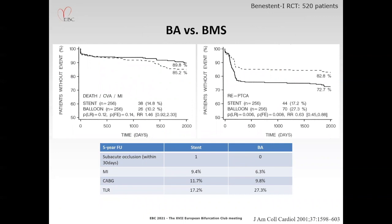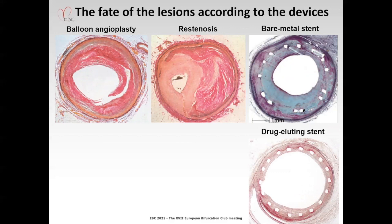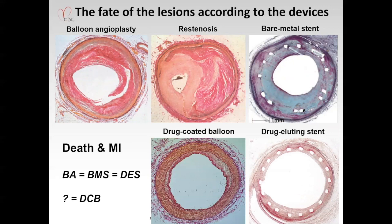Drug-coated balloon is basically working as a balloon angioplasty mechanism, so we need to know the balloon angioplasty effect. The BENESTENT-1 RCT compared balloon angioplasty to bare-metal stent and there was no difference in hard endpoints such as death and myocardial infarction. Only repeat PCI was more in the balloon angioplasty group, due to restenosis, which can be resolved with local drug treatment like drug-coated balloon. Bare-metal stent and drug-eluting stent were developed to resolve this problem, but hard endpoints such as death and myocardial infarction were not improved.